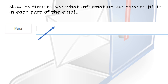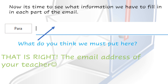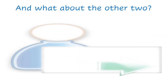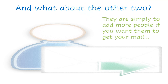Now it's time to see what information we have to fill in each part of the email. Can you see the arrow pointing at the bar? What do you think we must put there? That's right, the mail address of your teacher. And what about the other two? They are simply to add more people if you want them to get your mail.